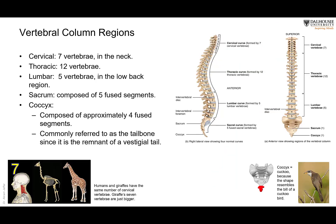The vertebral column has several regions. There are seven cervical vertebrae — the same number as in a giraffe. The first cervical vertebra is called the atlas. There are 12 thoracic vertebrae, five lumbar vertebrae, and then the sacrum, which is a single bone formed from five fused vertebral segments. Finally, there is the coccyx — the tailbone — which is very short in humans and is formed from four tiny fused segments.